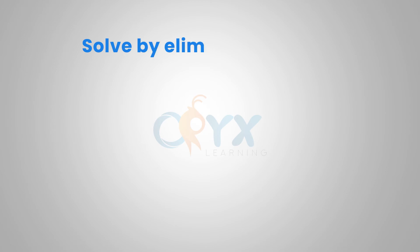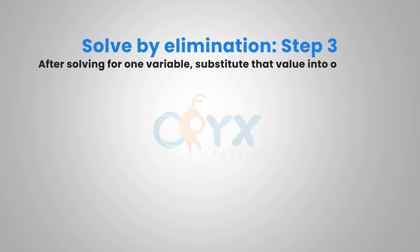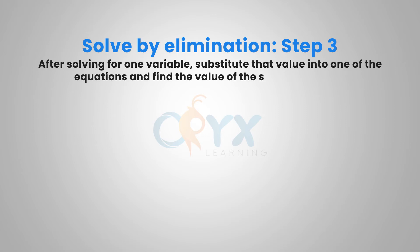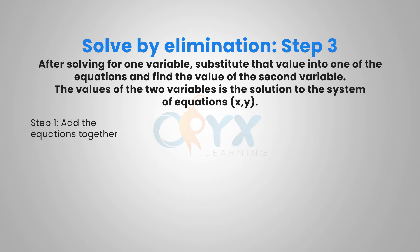For our third step to solve by elimination: after solving for one variable, we substitute that value into one of the equations and find the value of the second variable. The values of the two variables are the solution to the system of equations, which we write as a coordinate point (x, y).